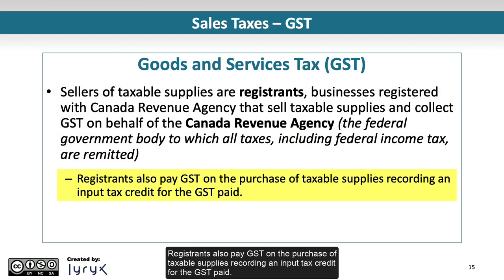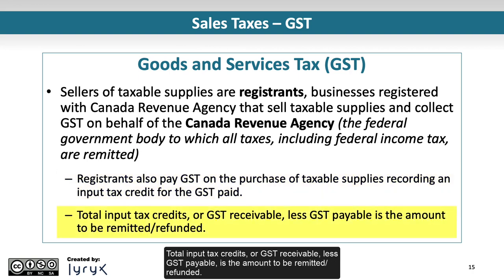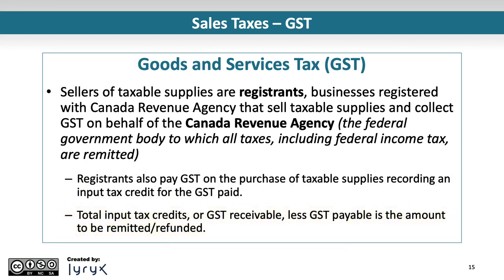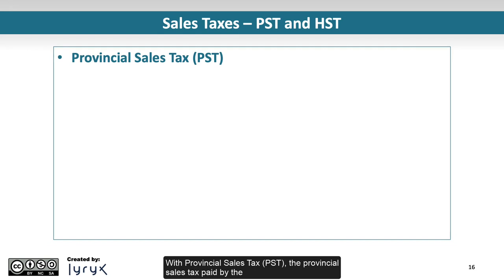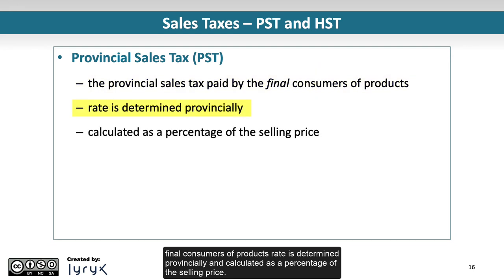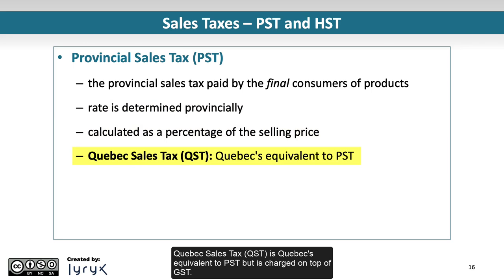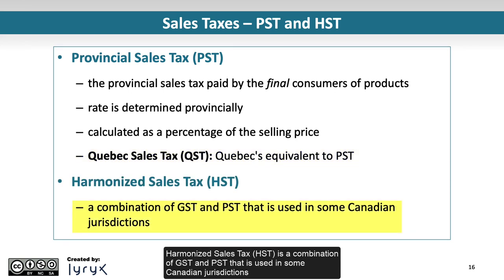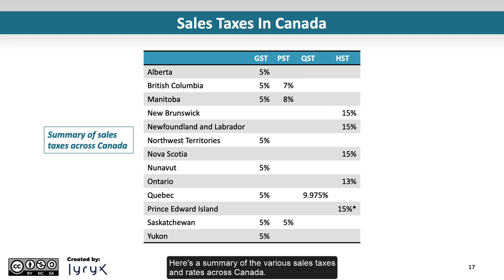Registrants also pay GST on the purchase of taxable supplies, recording an input tax credit for the GST paid. Total input tax credits, or GST receivable, less GST payable, is the amount to be remitted or refunded. With Provincial Sales Tax (PST), the rate is determined provincially and calculated as a percentage of the selling price. Quebec Sales Tax (QST) is Quebec's equivalent to PST but is charged on top of GST. Harmonized Sales Tax (HST) is a combination of GST and PST used in some Canadian jurisdictions. Here's a summary of the various sales taxes and rates across Canada.